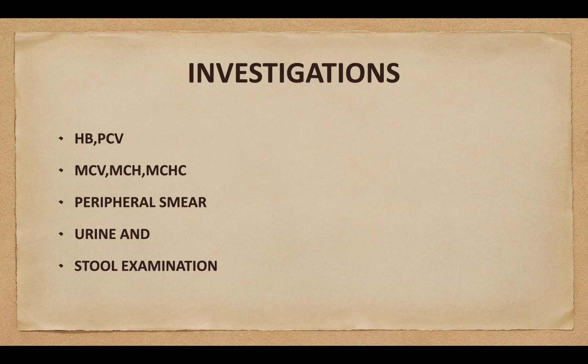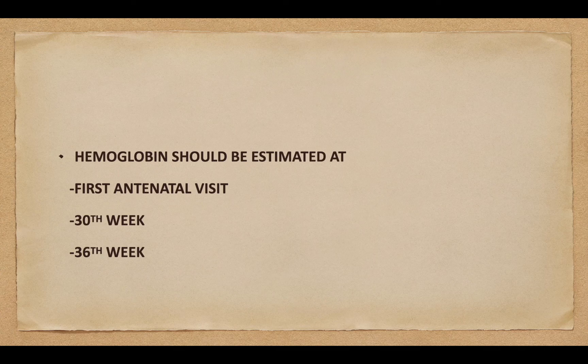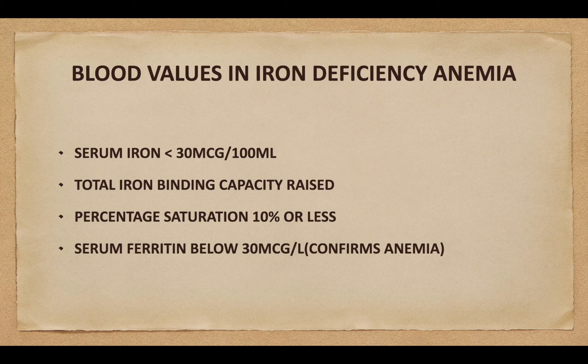Investigations: hemoglobin and PCV; red cell indices like MCV, MCH, MCHC; peripheral smear; urine and stool examination. Hemoglobin should be estimated at the 1st antenatal visit, 30th and 36th weeks of gestation. Blood values in iron deficiency anemia: serum iron will be less than 30 mcg per 100 ml; total iron binding capacity will be raised; percentage saturation will be 10% or less; serum ferritin will be below 30 mcg per litre, which confirms the presence of anemia.